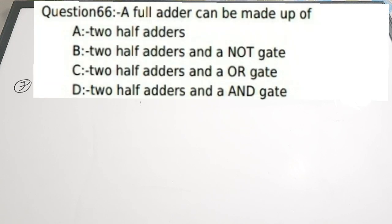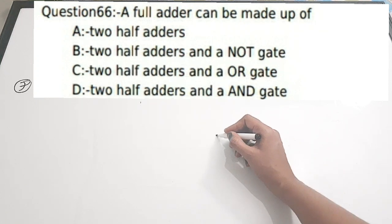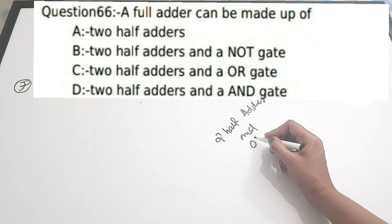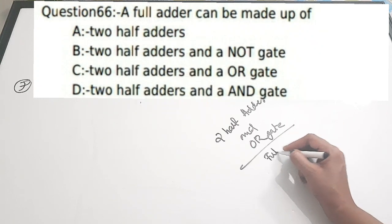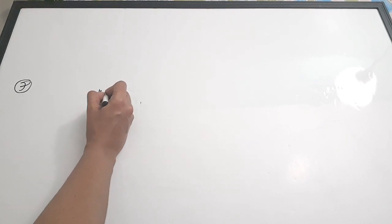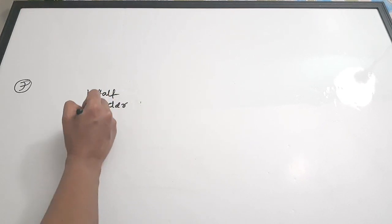Seventh question: A full adder can be made of — A) 2 half adders, B) 2 half adders and a NOT gate, C) 2 half adders and an OR gate, D) 2 half adders and an AND gate. Correct answer is option C — with 2 half adders and an OR gate, we can realize a full adder.